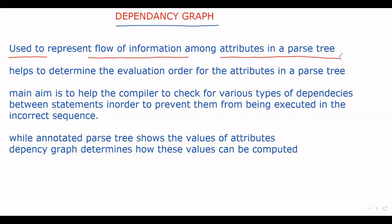That means once we have constructed a parse tree, the dependency graph determines in which order the attributes are evaluated — the flow of information. It specifies the evaluation order. It also helps the compiler to check for various types of dependencies between statements. If you have more than one statement, we have to check the type of dependencies between them.